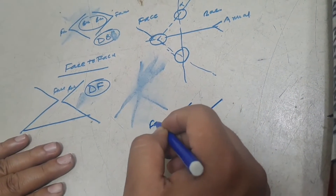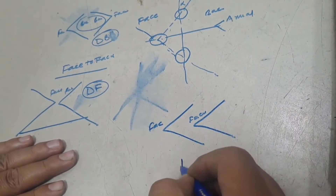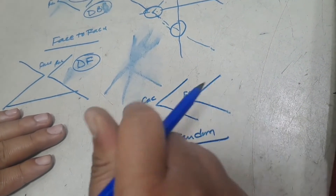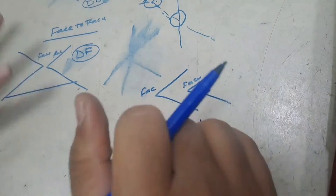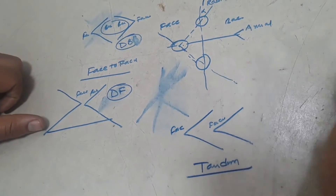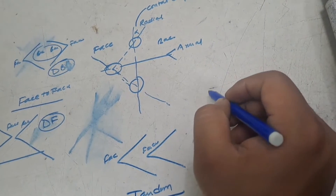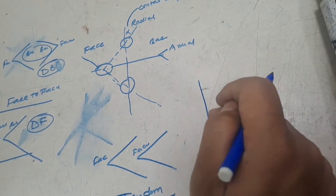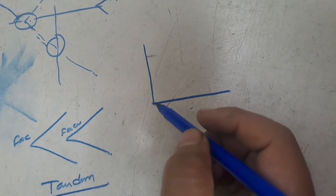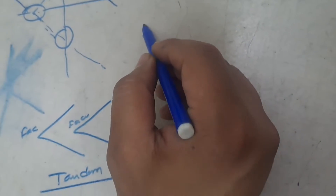The third arrangement is the tandem arrangement. In this arrangement, all the bearings are placed in the same sequence. In a tandem bearing, the back of one bearing faces the front of another bearing. Now we will understand how the forces in angular contact bearings work.